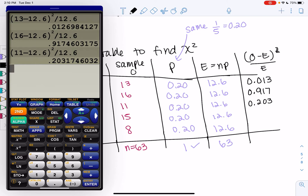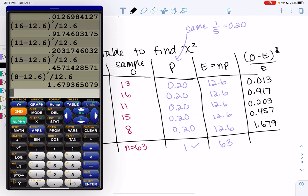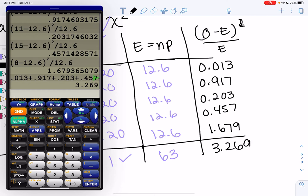It's a little closer because 11 is closer to 12.6. And then green and purple should be a little farther because they're a little bit farther from 12.6. So for green, we get 0.457. And then purple, I'm thinking should be the farthest off because 8 is pretty far away, and I get 1.679. So these are like my mini z scores. Let's go ahead and find the total. And that's our chi-square value. So 3.269 is chi-square.